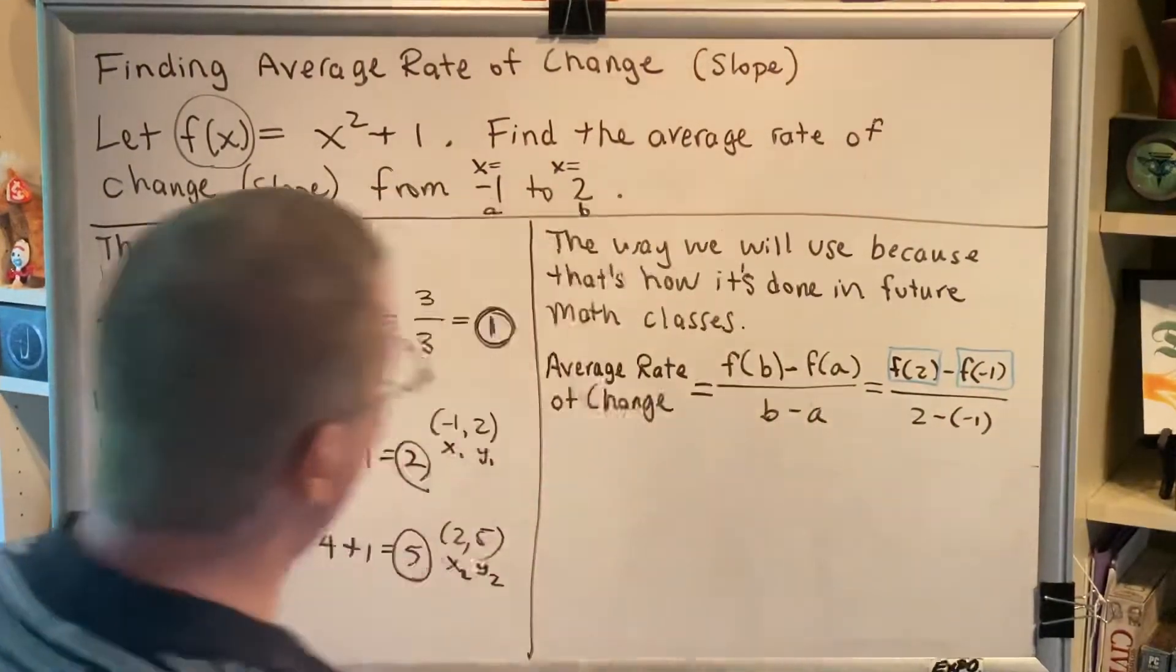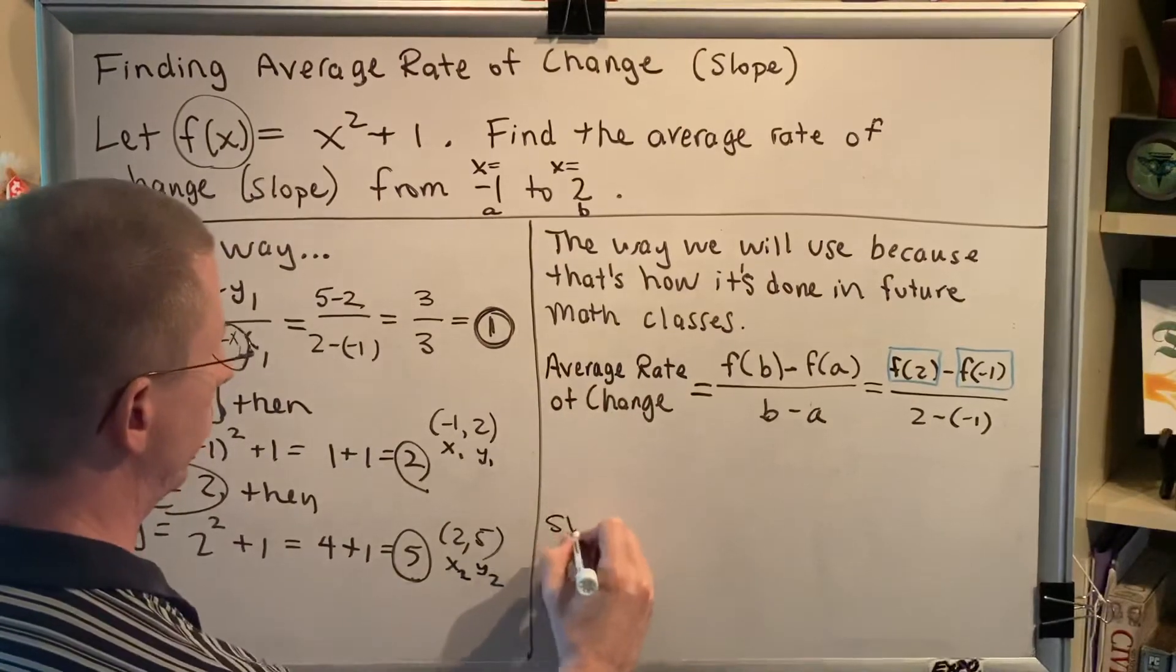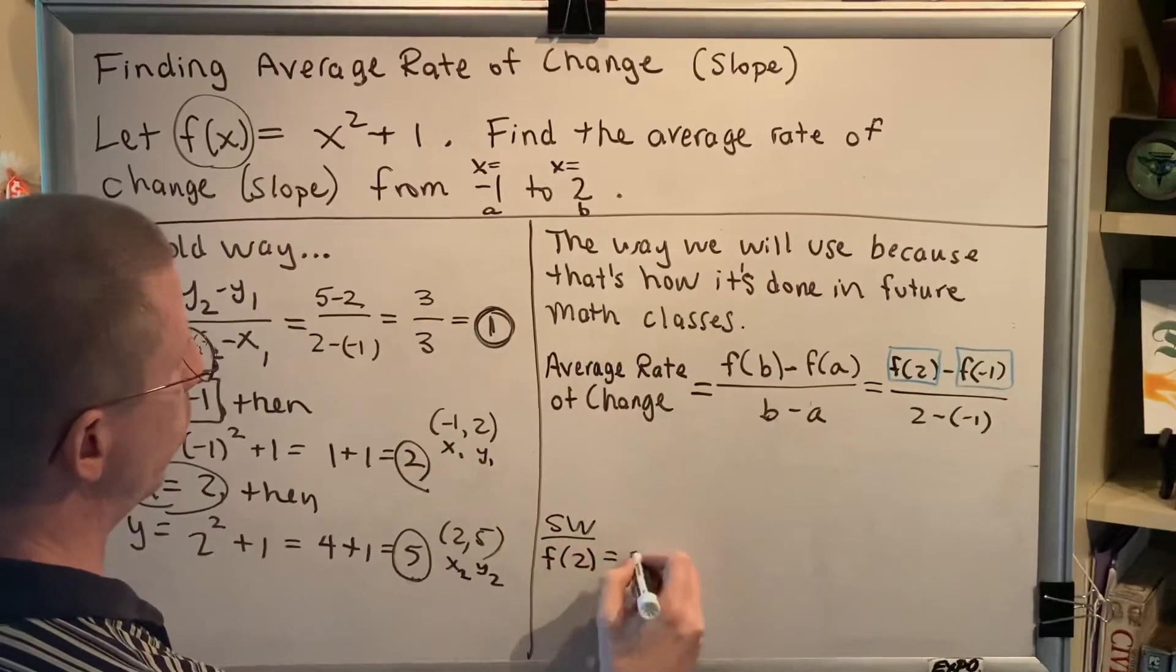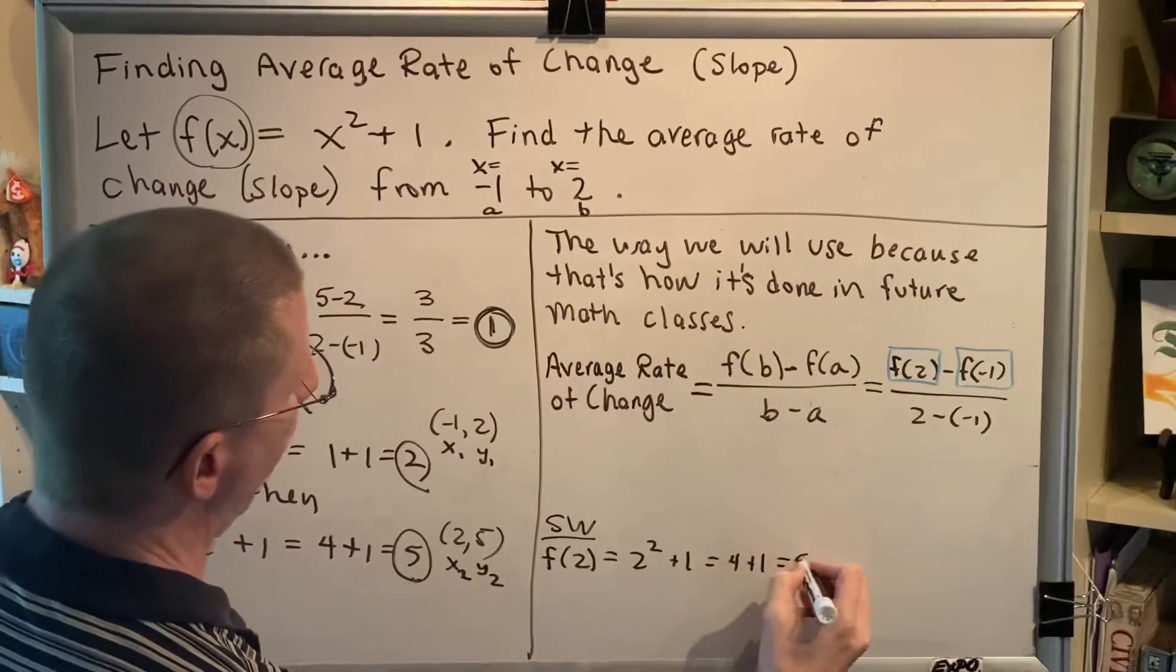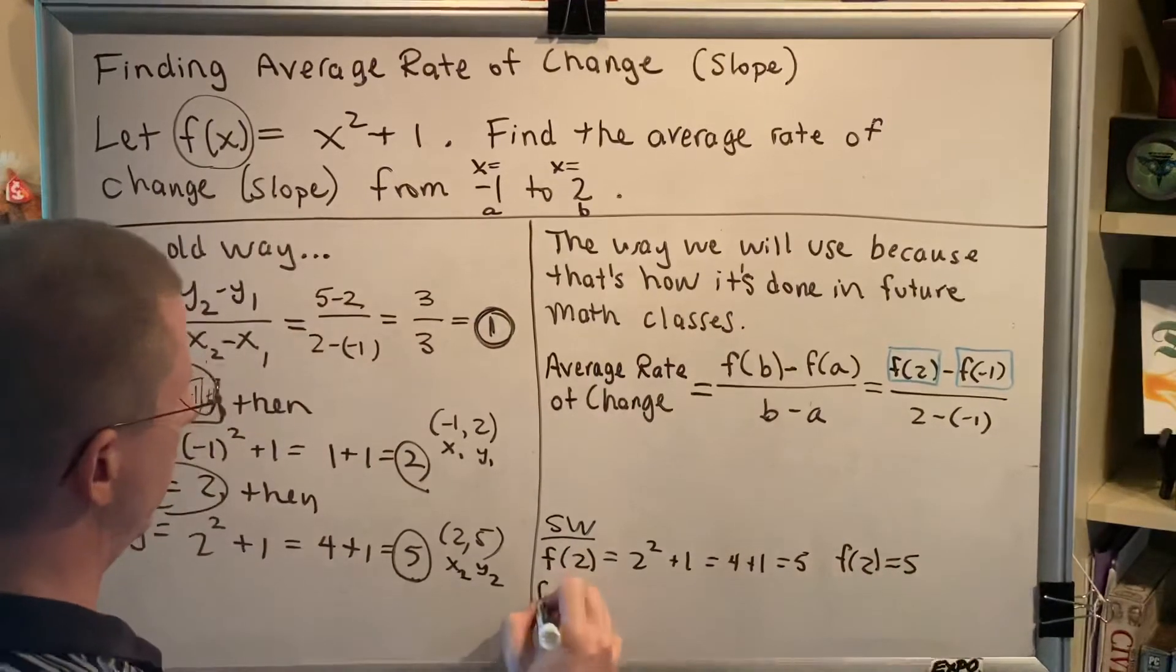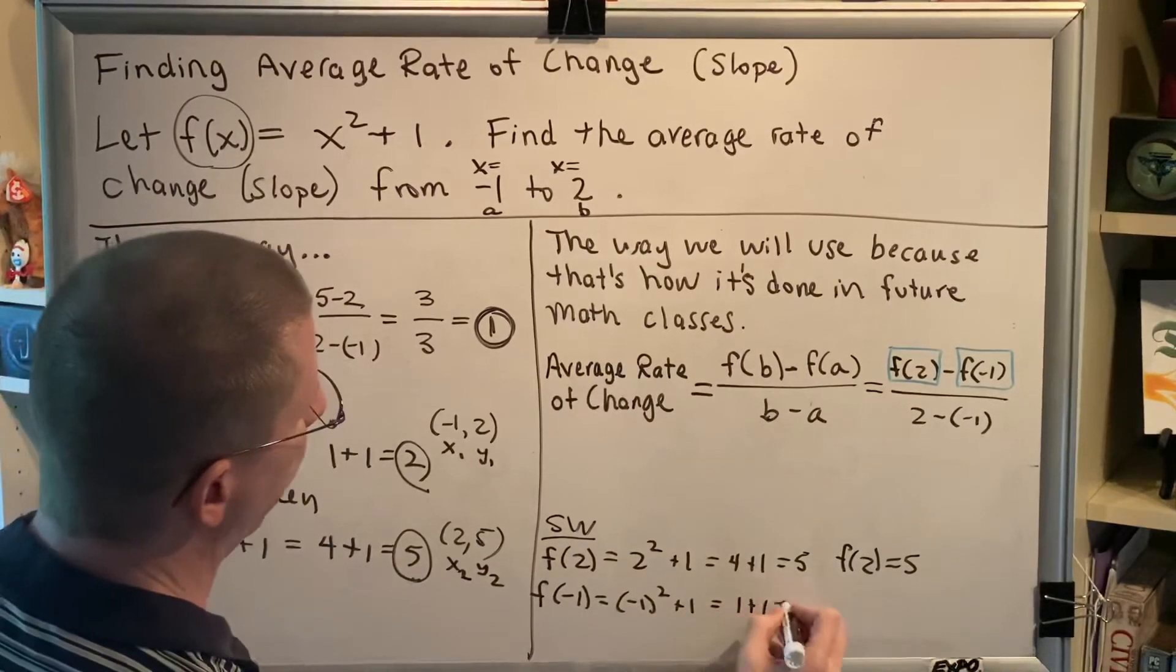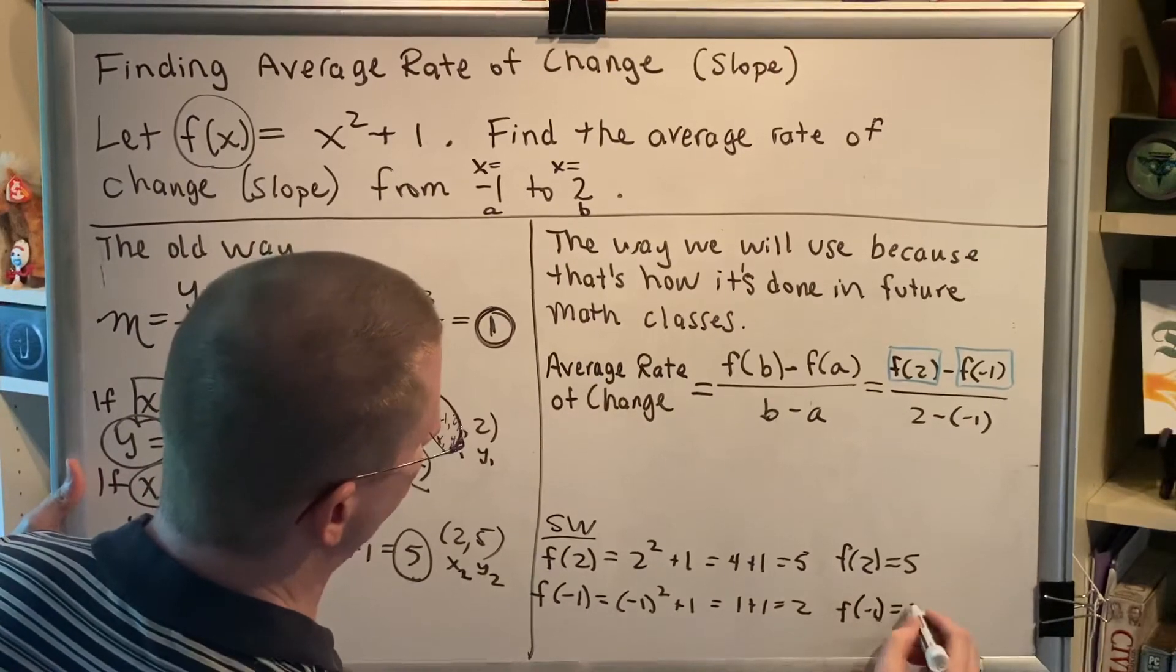Well, to figure that out, we need to plug into our function. So let's do that on our side workspace. So we know that f of x is x squared plus 1. So similarly, f of 2 would be 2 squared plus 1, which is 4 plus 1, which is 5. So f of 2 equals 5. And using a similar approach, f of negative 1 would be negative 1 squared plus 1, which is 1 plus 1, which is 2. So f of negative 1 is equal to 2.